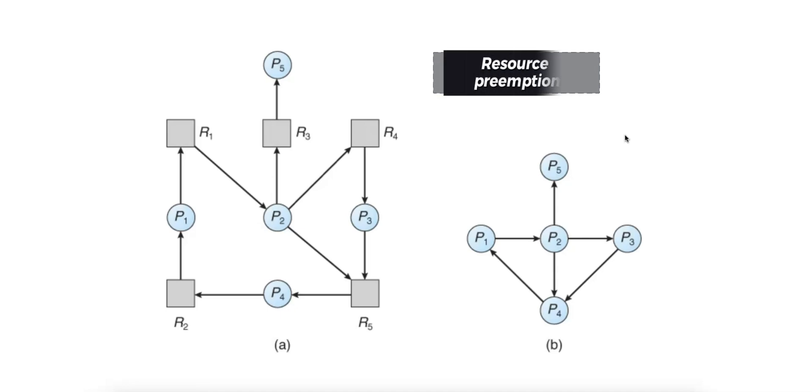Number two is resource preemption. This method involves forcibly taking resources away from processes and reallocating them to others. This can lead to inconsistencies, but may be necessary to resolve the deadlock.